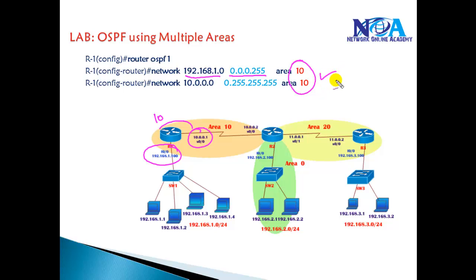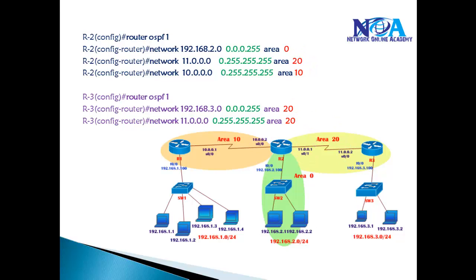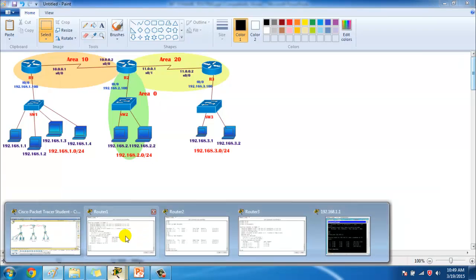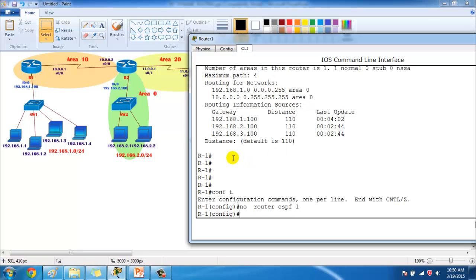On Router 2 we need to address the interface in area 10, the 11-network in area 20, and the 2-network in area 0. On Router 3 we need to address the 11-network and 3-network in area 20. We need a proper design satisfying OSPF design rules, then just change the area numbers when advertising — the remaining configuration is the same: define the network ID and wildcard mask with the area number. Now let's go to the command line. I have a single-area configuration from the previous lab that I'll remove first.